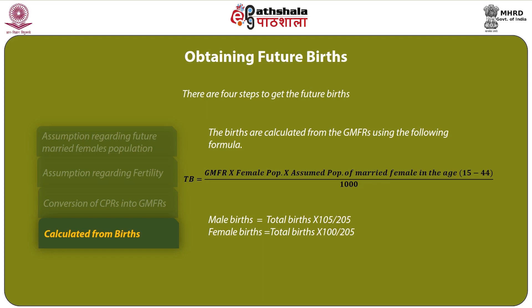In Step 4, births are calculated from the GMFRs using the following formula: Total births = GMFR × female population in the age group 15 to 44 years × assumed proportion of married females in that age group. Male births = total births × (105/205). Female births = total births × (100/205).